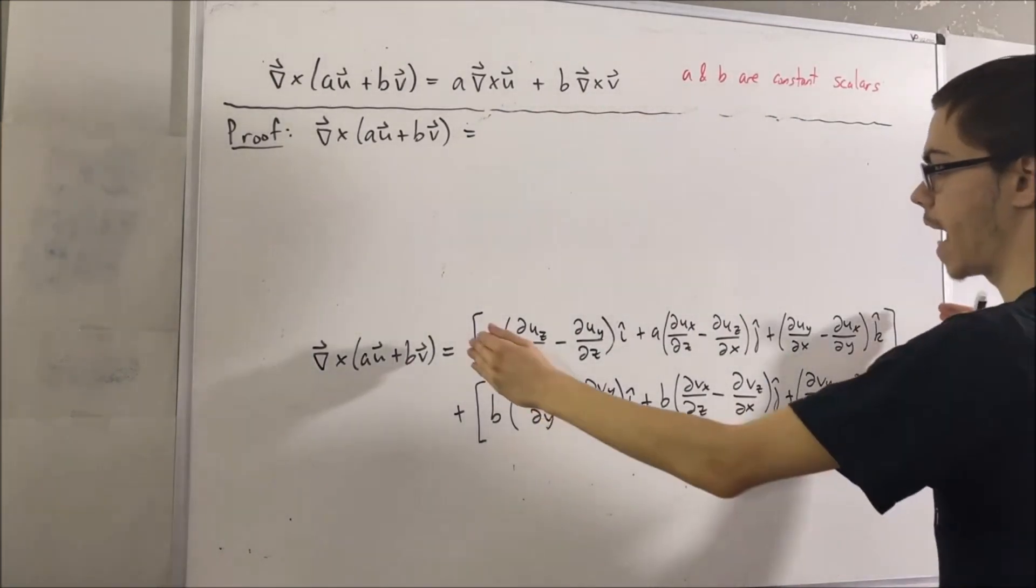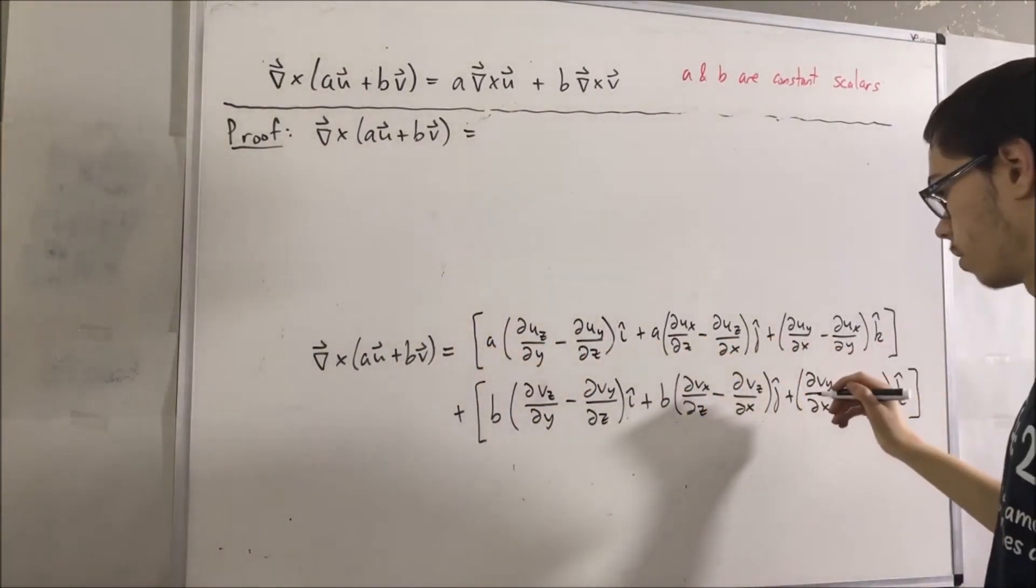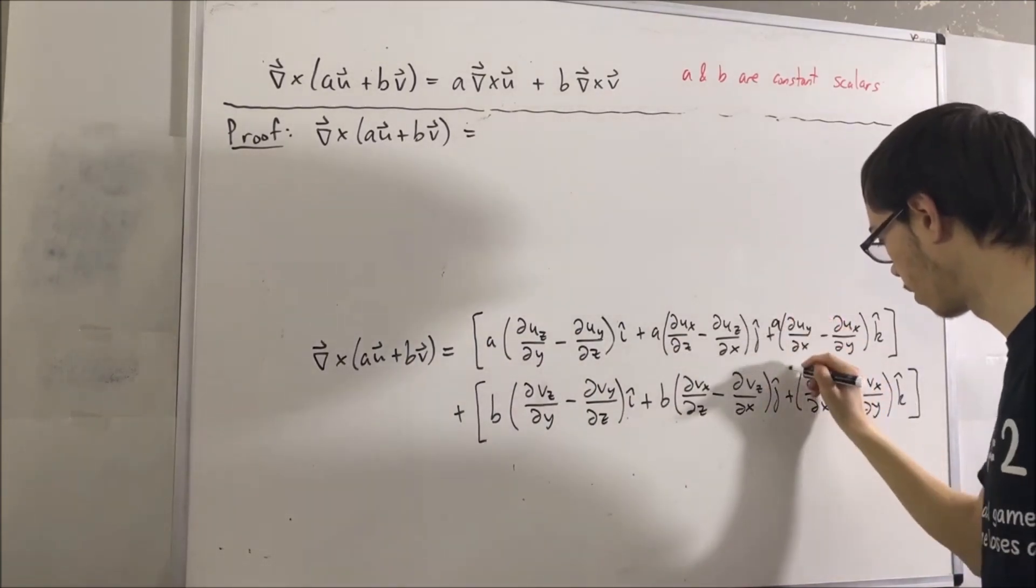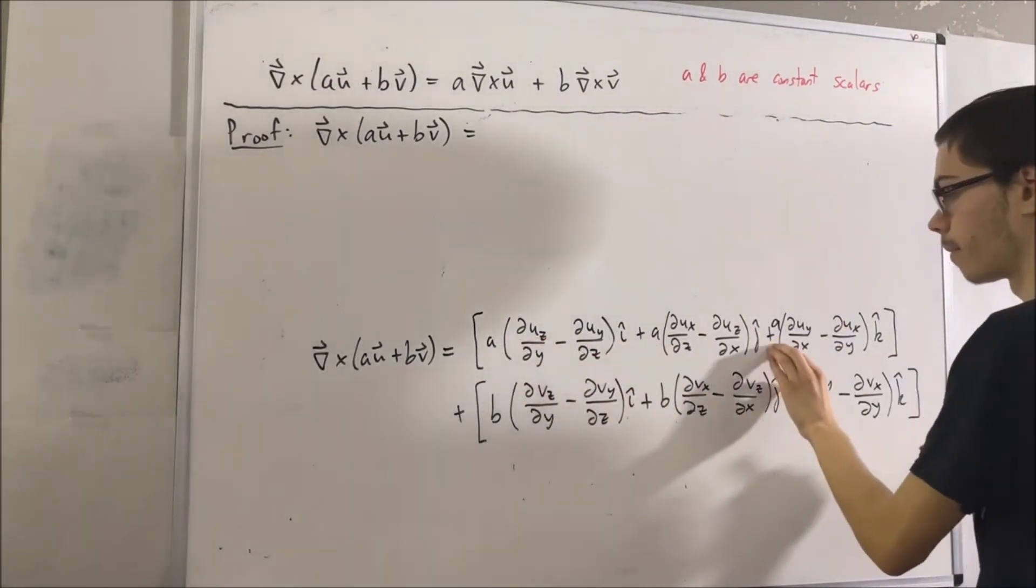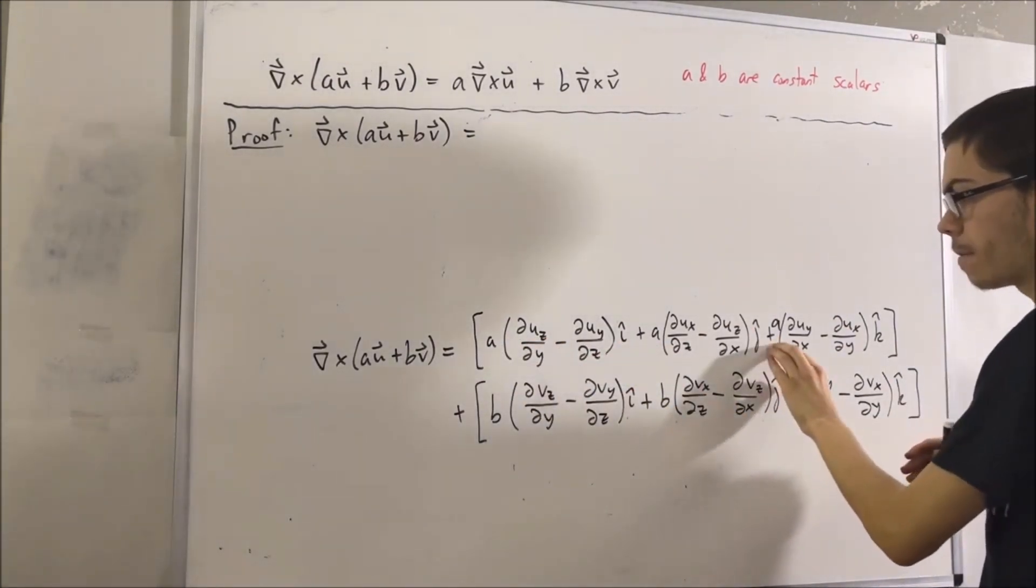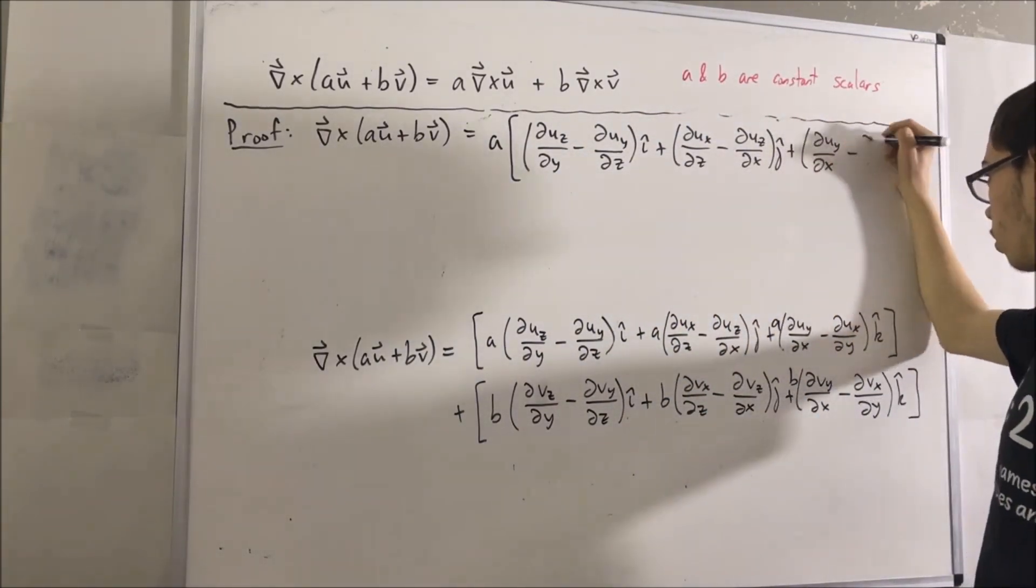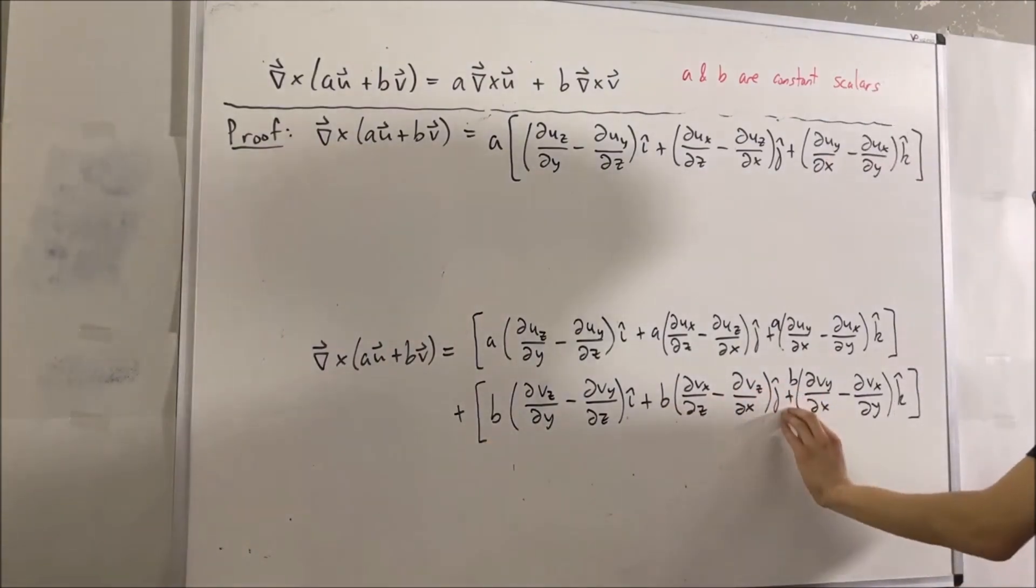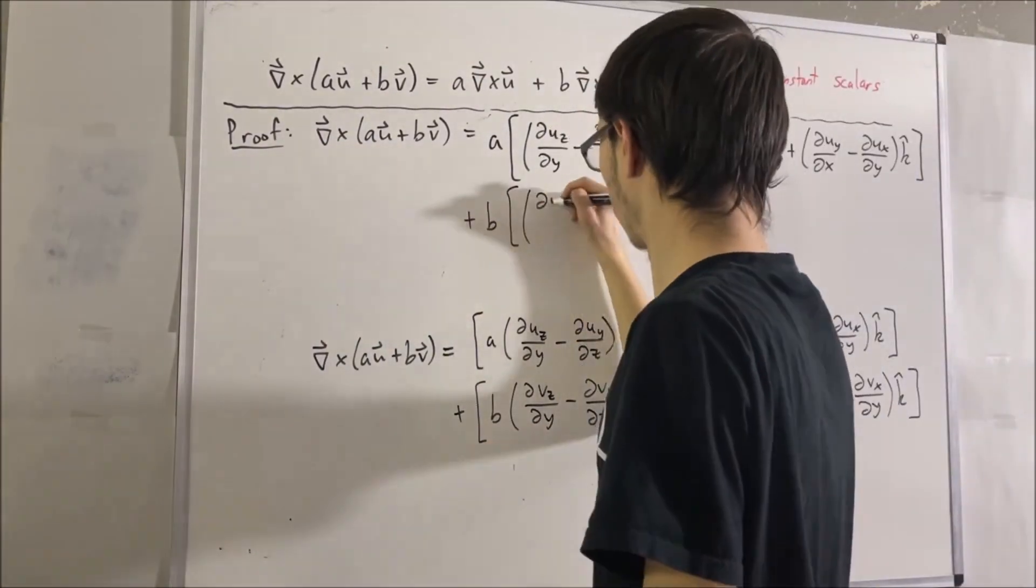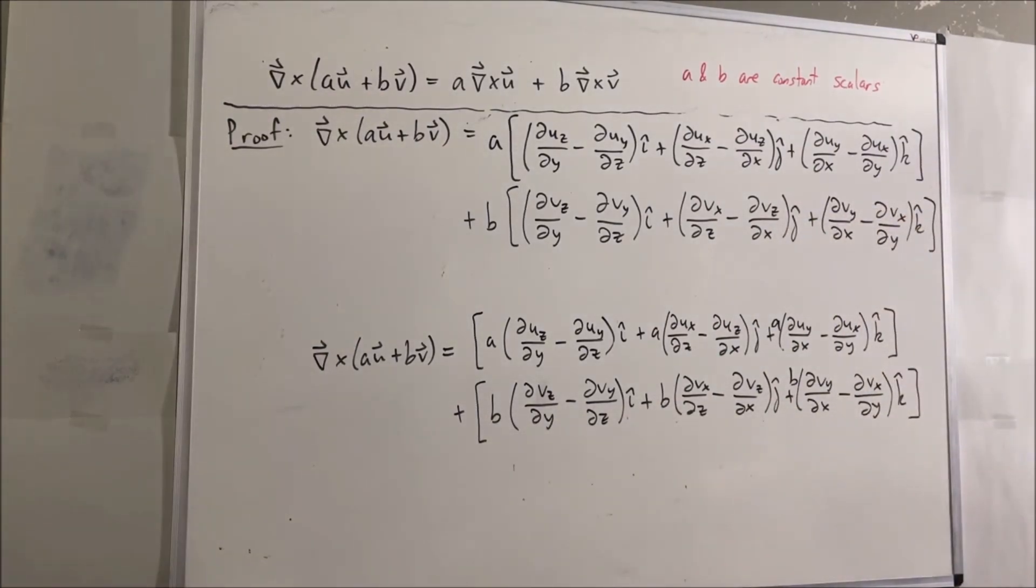We can factor out a... Oh, I forgot. How did I forget to put an a and a b here? We can factor out a from the first vector. And we can factor out a b from the second vector. Just like that.